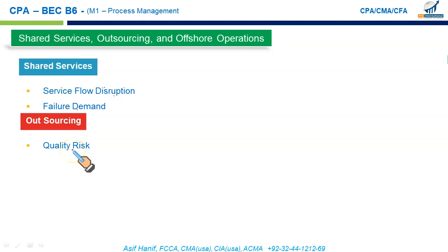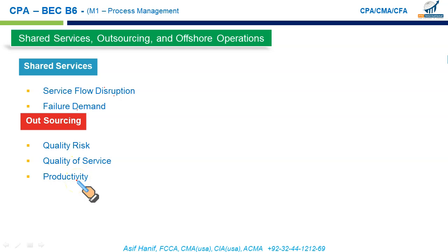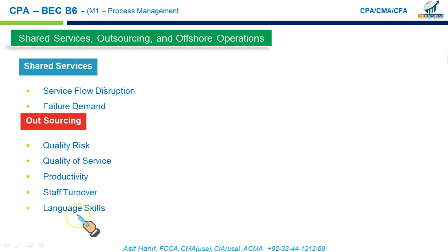Quality of service may also suffer if poorly designed service agreements restrict it. Productivity is not in your control — someone else is doing your job. Staff turnover is another risk: when you outsource accounting, legal, or payroll work to an external provider, your experienced and valued staff may no longer be required, and you may have to make them redundant.